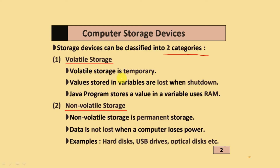Volatile Storage is temporary, and values stored in variables are lost when you shut down a computer. A Java program stores values in variables by using random access memory.